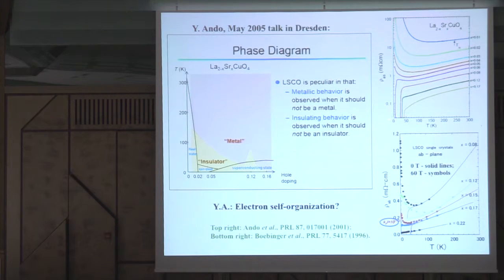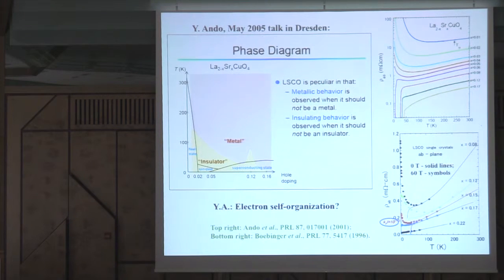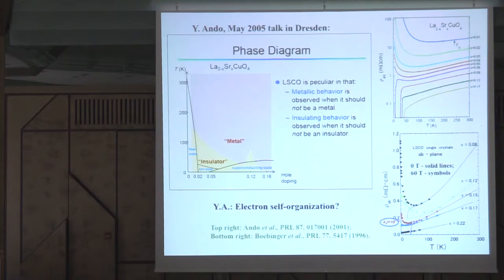Our studies are done at very low temperatures, probably below all of these measurements. Ando argued that these features could be understood in terms of some kind of electron self-organization, in particular the formation of stripes.